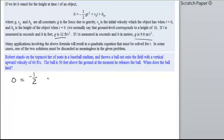Negative 1 half g. Well, we know g is one of these two. We're given feet in seconds, so we're going to look at 32 feet per second squared. And then t squared. Well, we don't know that, do we? When does the ball hit the, or when does the ball land? So, we're actually looking for t.